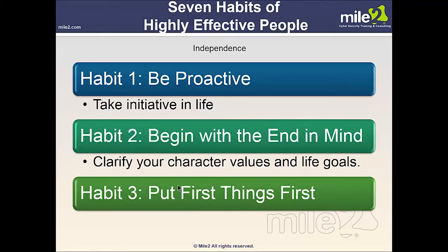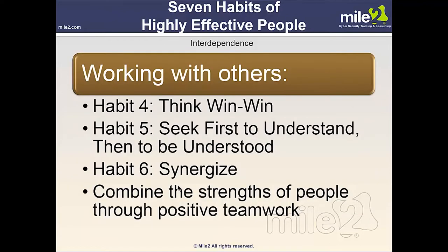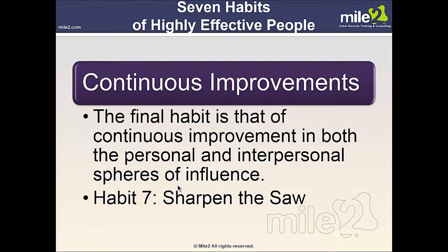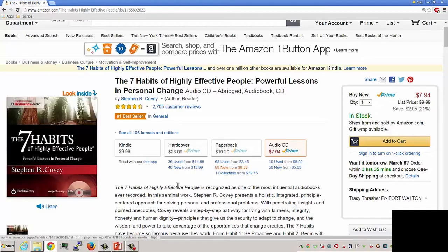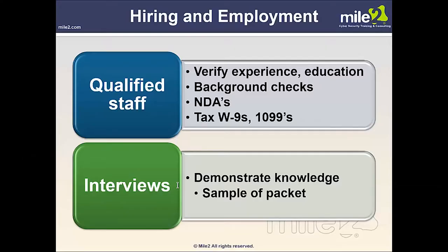Seven Habits of Highly Effective People. Habit 1 — Be proactive: take the initiative, not reactive. Habit 2 — Begin with the end in mind: clarify your character values and life goals. Habit 3 — Put first things first. Habit 4 — Think win-win. Habit 5 — Seek first to understand, then be understood. Habit 6 — Synergize: combine the strengths of people through positive teamwork. Habit 7 — Sharpen the saw: continuous improvement in both the personal and interpersonal spheres of influence. The book demonstrates proven principles of fairness, integrity, honesty, and human dignity.